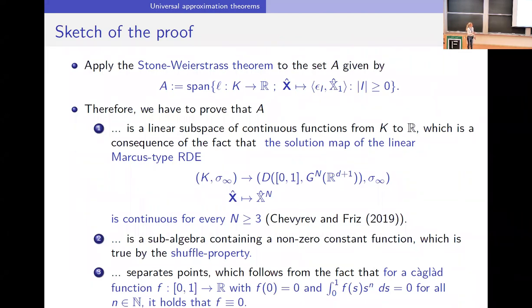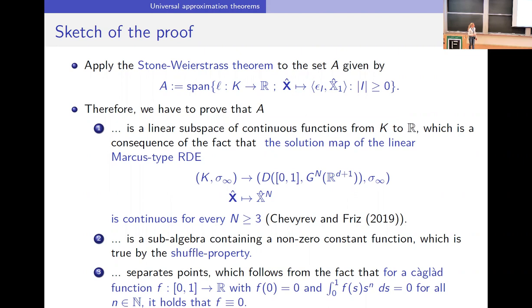The proof idea is again the Stone-Weierstrass theorem. The key step is showing that the solution map of the linear Marcus rough differential equation is continuous in the J1 topology — which was shown in the paper by Peter Friz and Ilia Chevyrev — and that the shuffle product property holds. Adding time, point separation is also not difficult: if a Cadlàg function is zero and you get by time extension that all integrals with respect to s^n are zero, then the function was already zero, giving the approximation theorem.